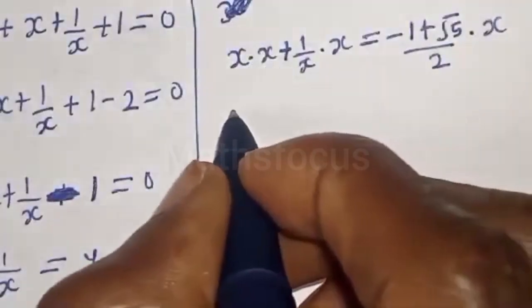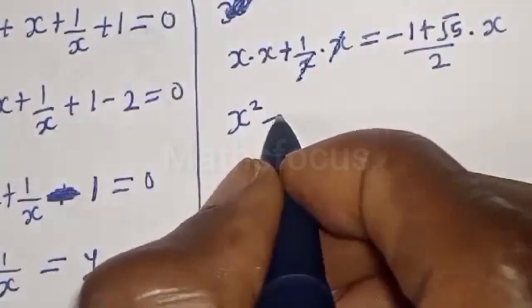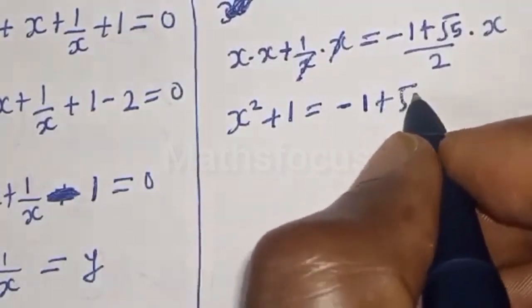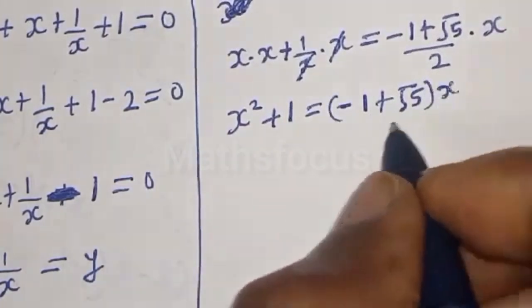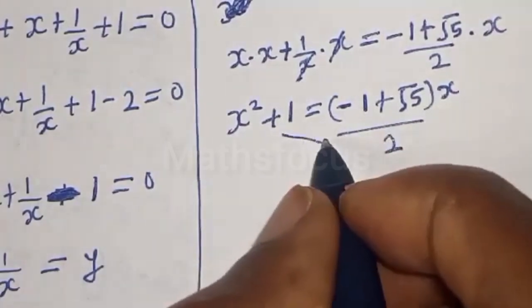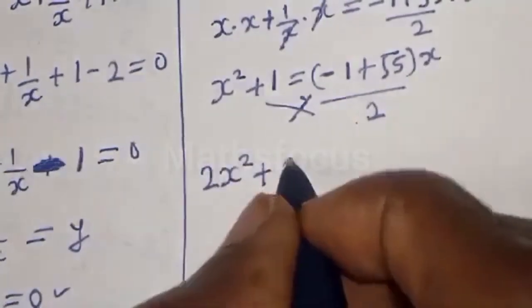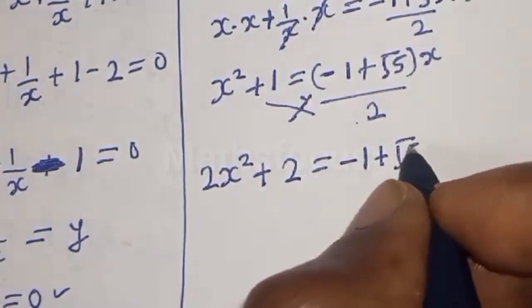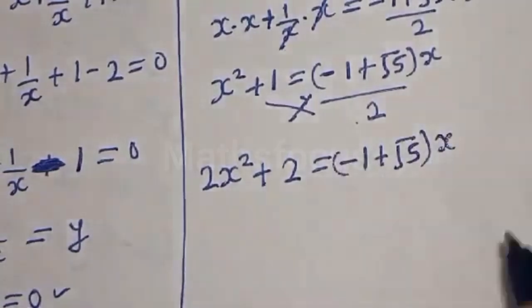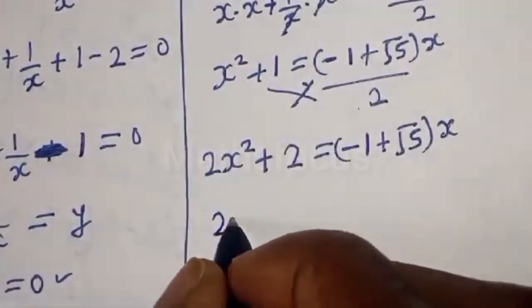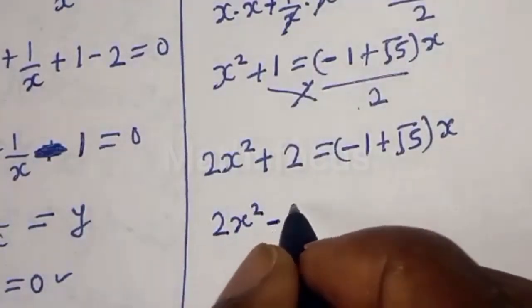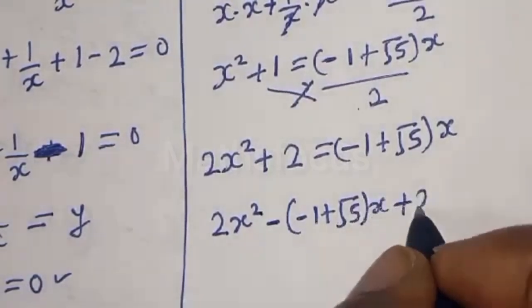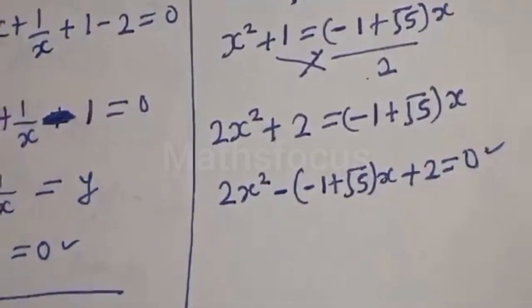Cross multiplying: 2x squared plus 2 equals minus 1 plus square root of 5 times x. Rearranging, we have 2x squared minus negative 1 plus square root of 5 times x, plus 2 is equal to 0. This is also a quadratic equation. Using the quadratic general formula: x equals minus b plus or minus square root of b squared minus 4ac, over 2a. This equation is 2x squared plus 1 minus root 5 times x plus 2 equals 0.